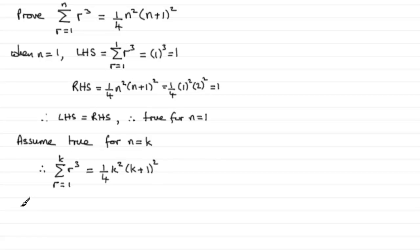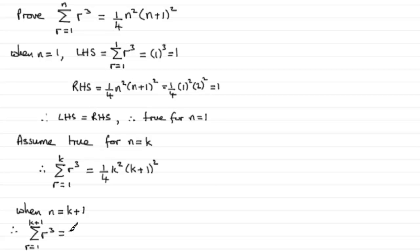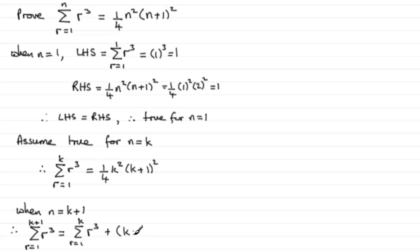We now need to check it out for when n equals k plus 1. So when n equals k plus 1, the summation of r cubed going from r equals 1 to k plus 1 equals the sum of the first k terms — that's the sigma of r cubed from r equals 1 to k — plus the k plus 1 term, which is k plus 1, all cubed, added on at the end.